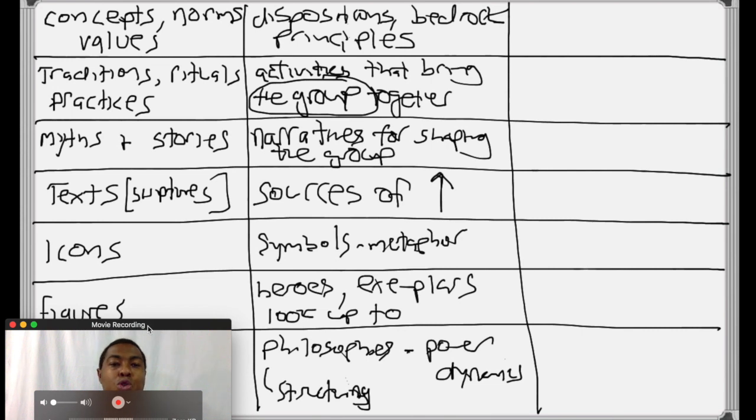What are the cultural norms and values of Christians? What are the dispositions or bedrock principles that Christians are all about? Forgiveness. That's a key concept, norm, or value. They're going to talk about faith in Christ. We're going to talk about being saved. Salvation is key. It's valued in Christianity.